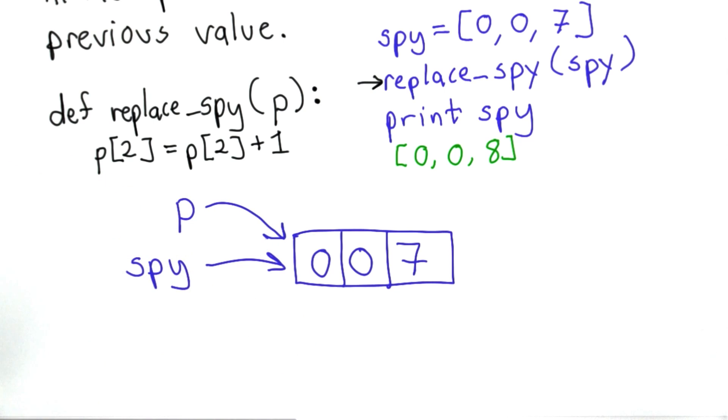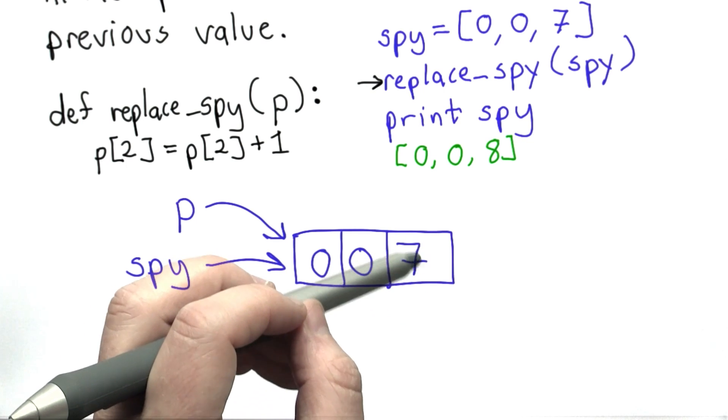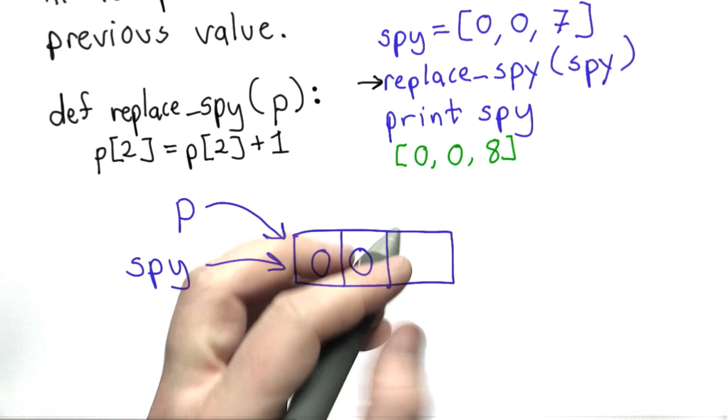Then we do the assignment. We replace the value in position 2 of p with its previous value plus 1, so that changes this value to 8.